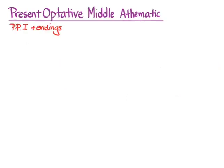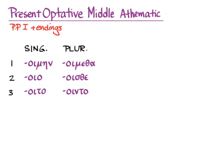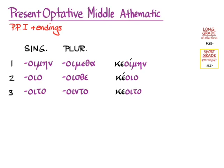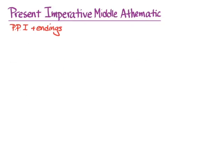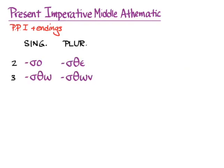For the optative, we're actually going to go back to the thematic endings for the middle, but we are going to use the short grade and not contract it with these endings. So we'll get κεοίμην, κέοιο, κέοιτο, κεοίμεθα, κέοισθε, and κέοιντο. So the short grade athematic stem, but on the thematic optative endings that we've had since we learned the middle voice.